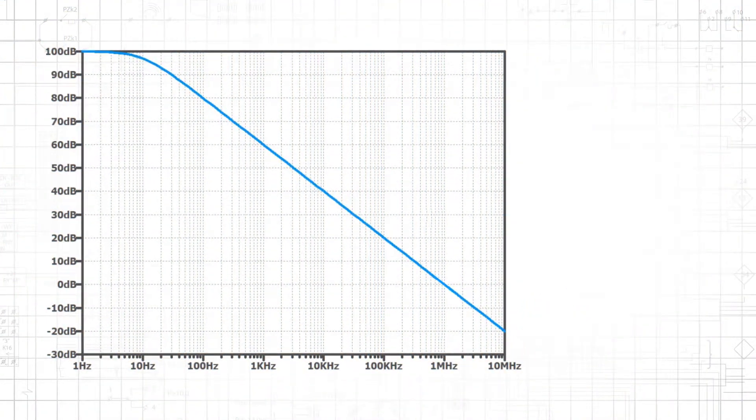Because the op-amp's gain is a value that varies according to frequency, we write it as A as a function of JF, instead of simply A.